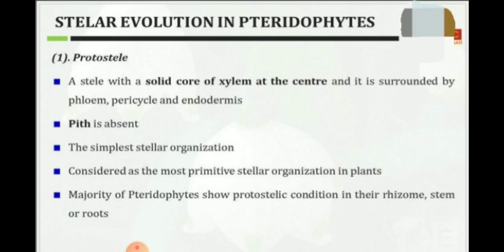Now we see in detail the different types of stele. The first type is protostele. In protostele, the vascular tissue is a solid mass and the central core of the xylem is completely surrounded by a layer of phloem. This is the most primitive and simplest type of stele. Majority of pteridophytes show protosteelic condition in their rhizome, stem, or root.